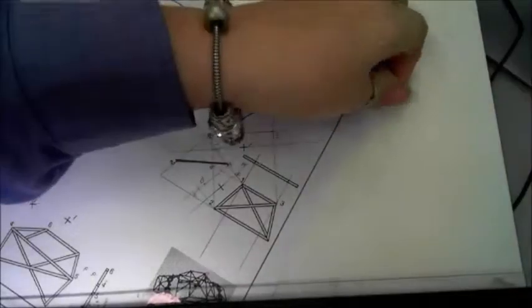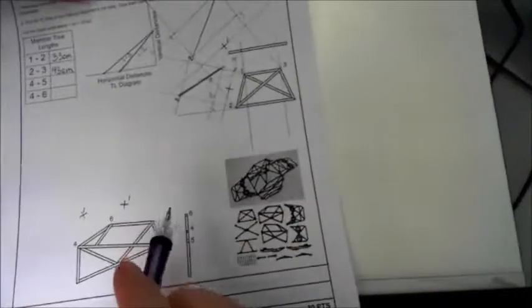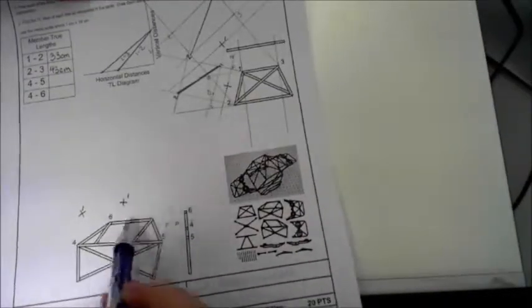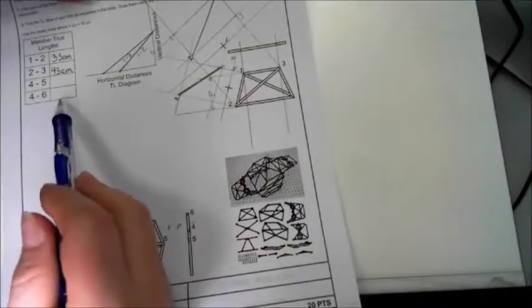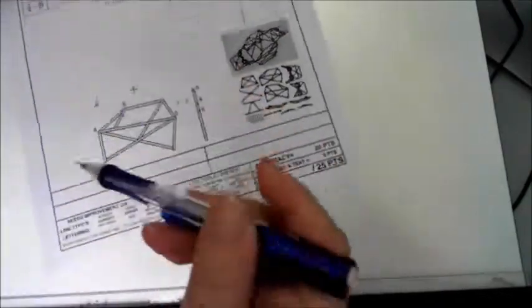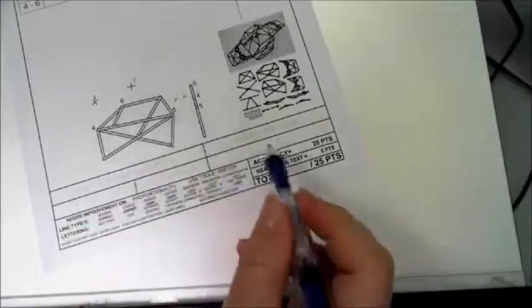And then what you're going to need to do on your own, I'm not going to show it to you. You're going to have to go do it on your own. You can look at the example, what it should end up looking like. But you want to find your true length lines for 4, 5, 4, 6, and then tell me using the metric, what does that measurement count to be? And again, don't forget to fill out your title block here at the bottom.